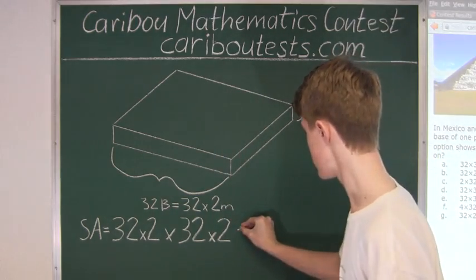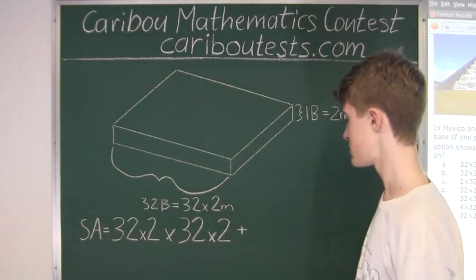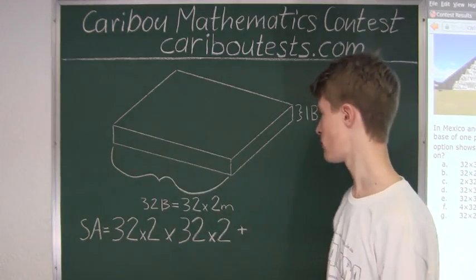And now we have to add this to the 4 side surface area. So let's find the surface area of just this side and then we will multiply it by 4.